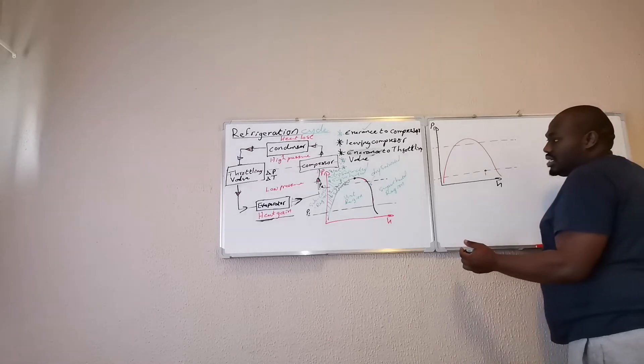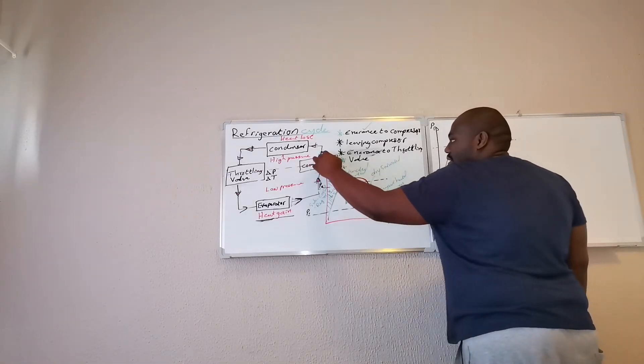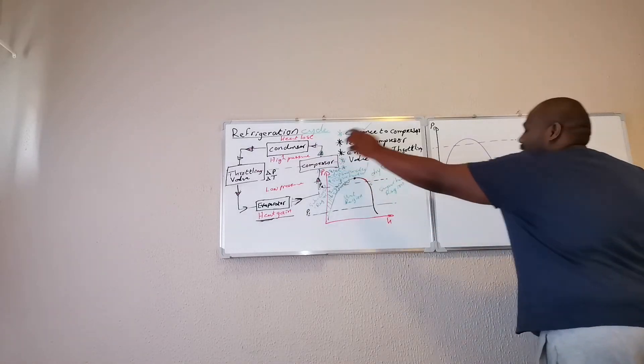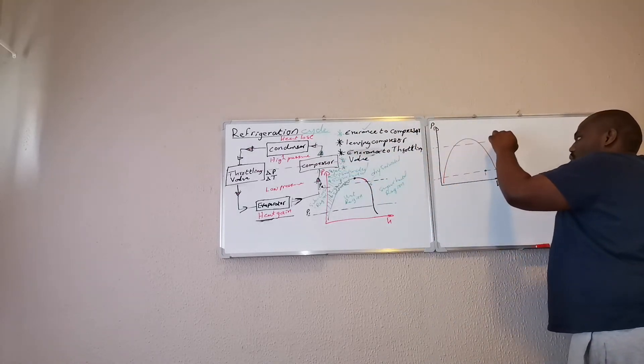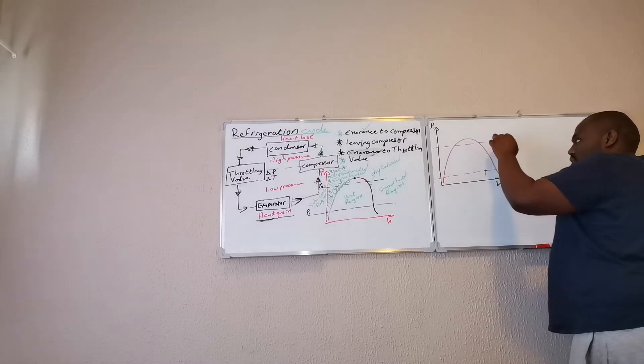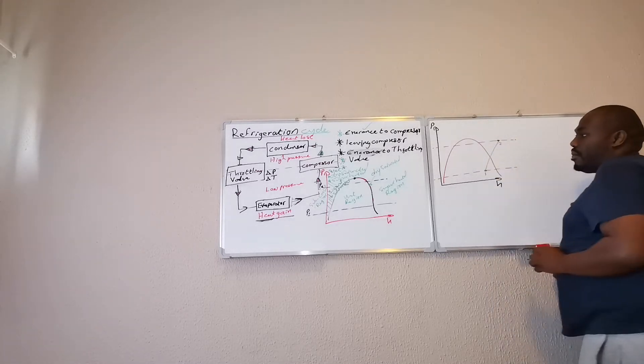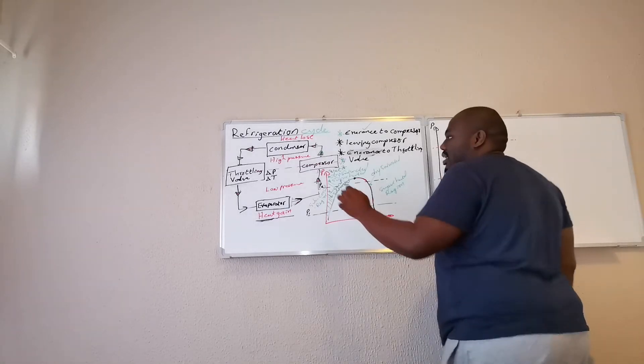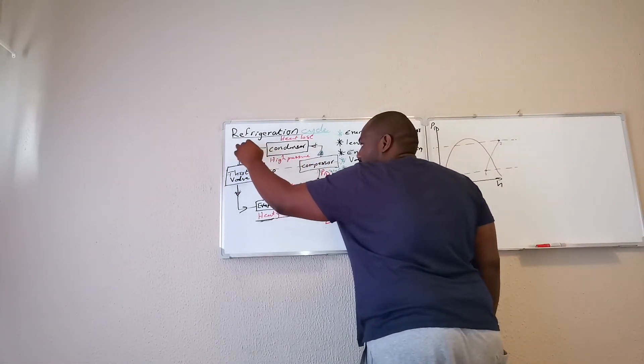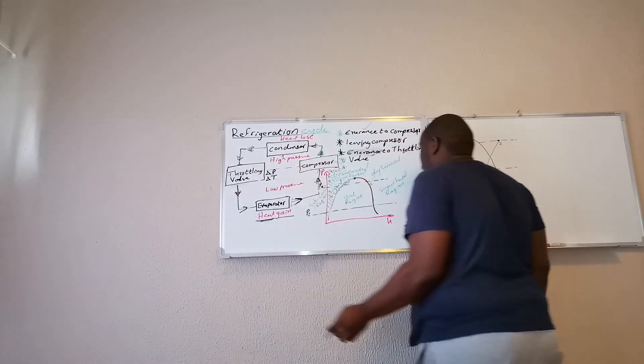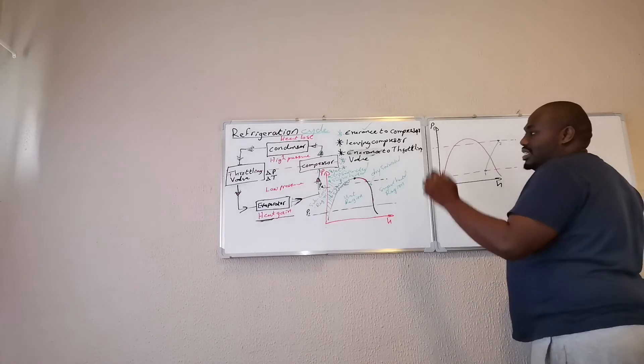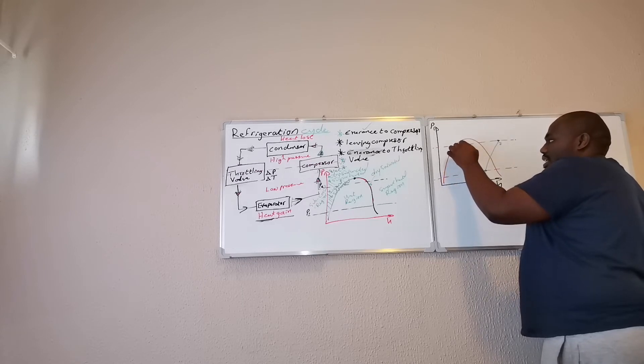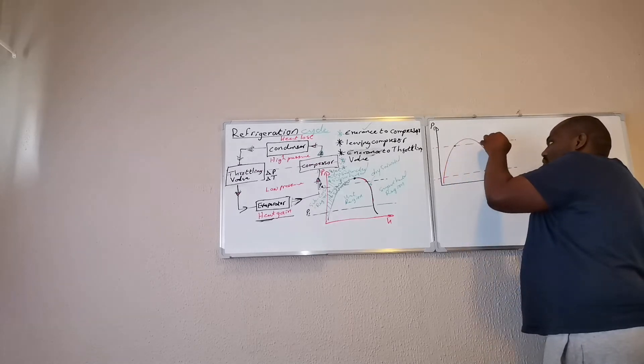Second assumption is that it is leaving my compressor superheated. So, at the highest pressure, my point two would be there. So, I can join that line over there. Then, at exit from my compressor, so at exit from your condenser, which is over there. So, if exiting your condenser, it's going into your throttling valve. I'm assuming that it is liquid saturated. So, this is my liquid saturated curve at high pressure. My point would be there. So, I can draw a line over there.